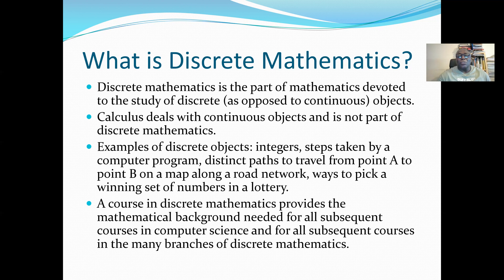Discrete mathematics is the part of mathematics devoted to the study of discrete objects. For example, college algebra and calculus deal with continuous objects, which are not part of discrete mathematics. Examples of discrete objects include integers — whole numbers. A decimal number is continuous, while steps taken by a computer program, one step at a time, are discrete.